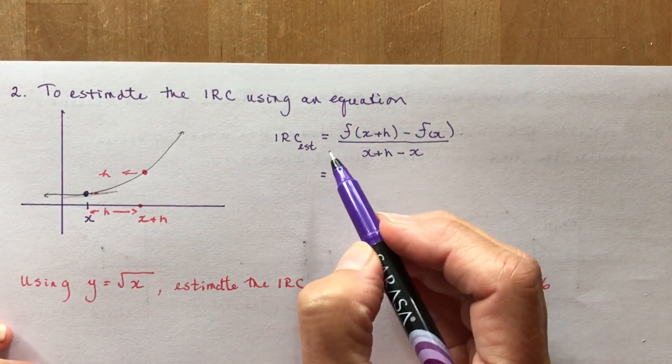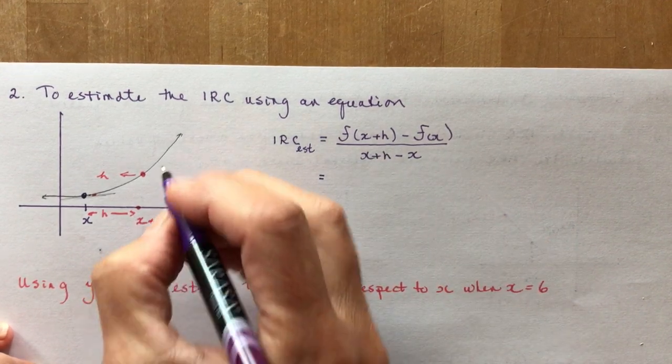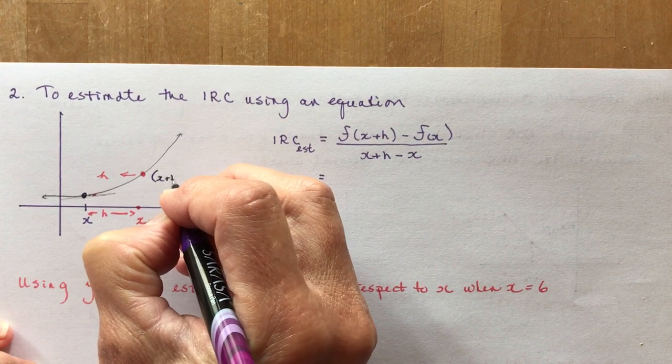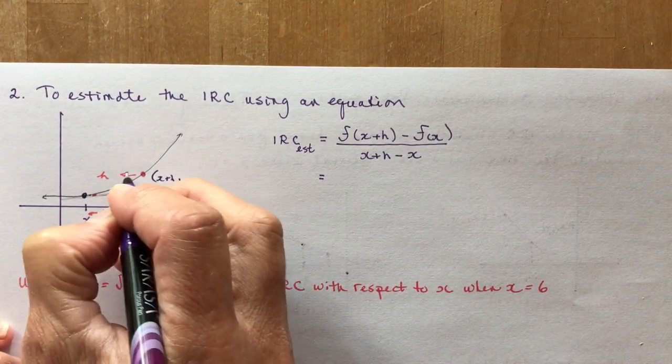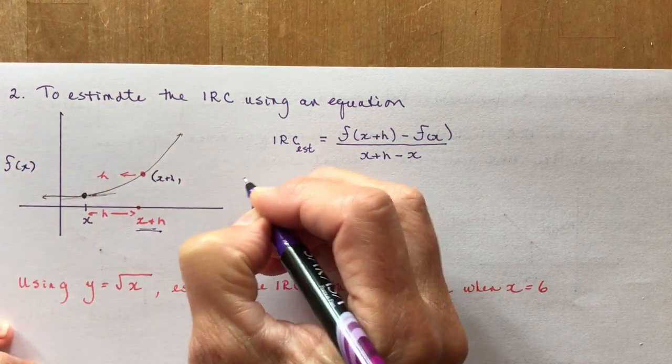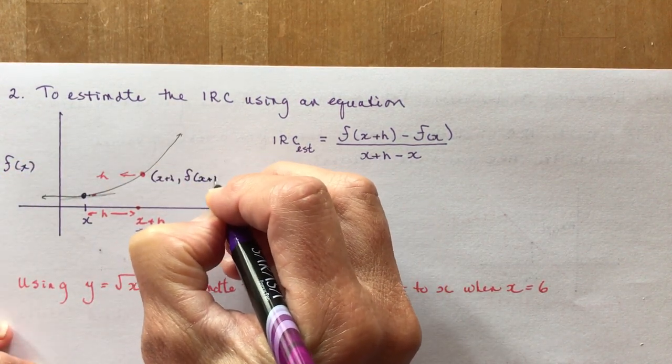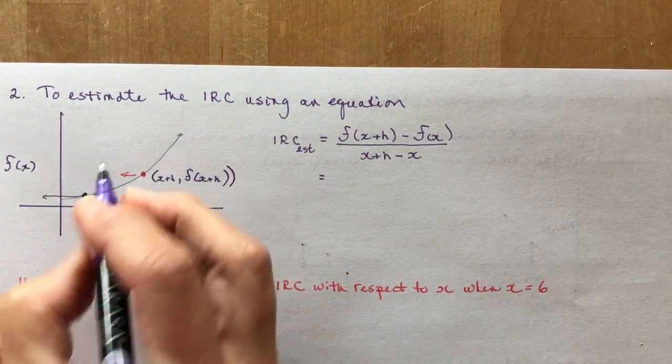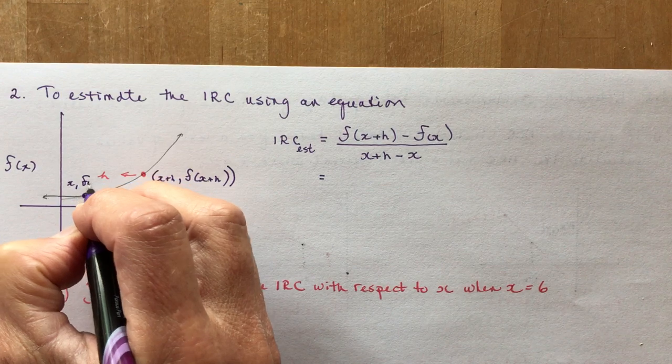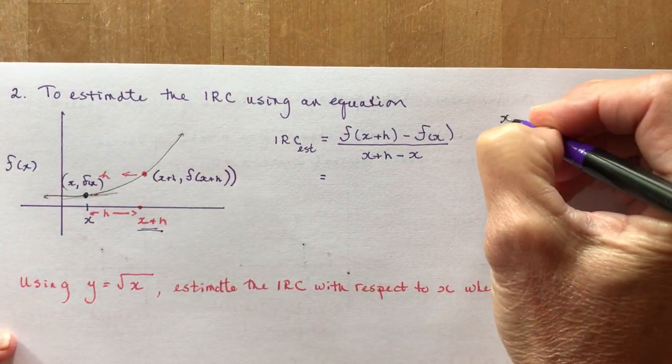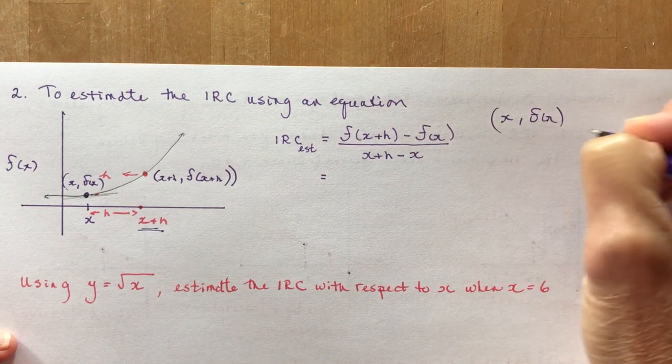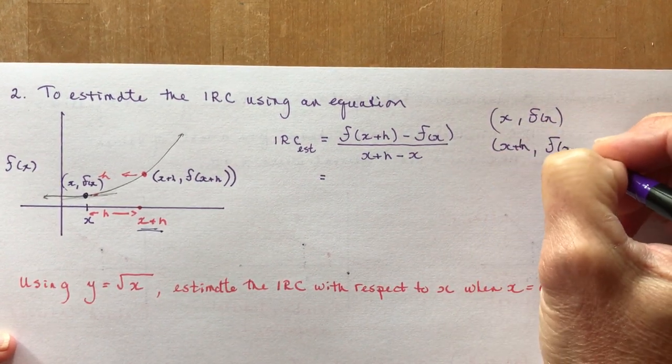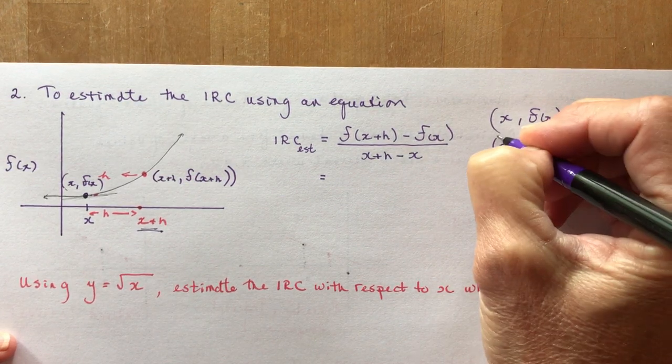Looking at this equation here, this point, this is x plus h, that's my x coordinate. See, it was right here. And the height, this is going to be f at x, so this is going to be f at x plus h. It's not confusing at all if you think about it like that. This point here is just going to be x and f at x. So my two coordinates are x and f at x, and x plus h and f at x plus h.